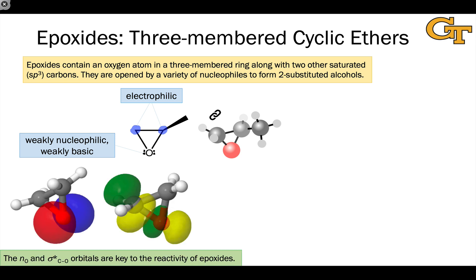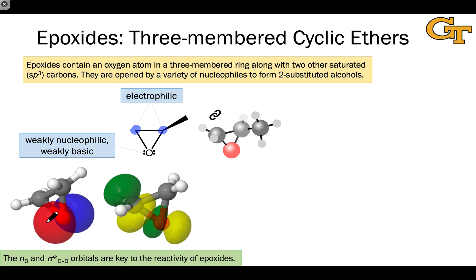From an orbital perspective, the reactivity of epoxides can be broken down into nucleophilic and electrophilic behavior. The nucleophilic behavior is due to the non-bonding lone pair orbital on oxygen. The electrophilic reactivity can be attributed to the sigma star C–O orbital.